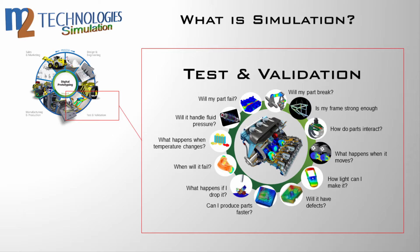Simulation takes place in the test and validation phase of the digital prototyping process. This is the phase where critical questions need to get answered — questions like: will my part break? How light can I make it? What happens when the temperature changes? These questions have traditionally been answered by building a physical prototype for testing, a costly and time-consuming process. Leveraging your digital prototype and the Autodesk Simulation software portfolio, products can be tested in a virtual environment, thereby reducing or eliminating costly physical prototype iterations.